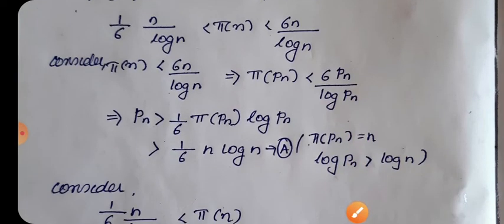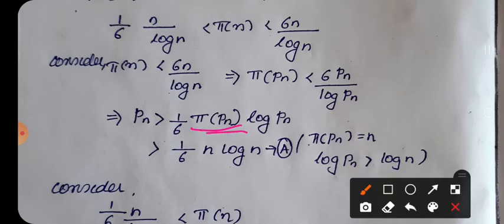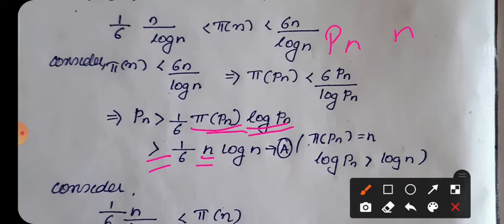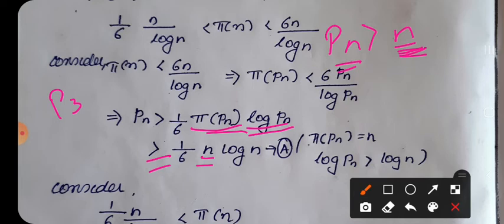Since pn is the nth prime, we know π(pn) = n, meaning the number of primes less than or equal to pn is exactly n. Also note that pn ≥ n: for example, p1 = 2, p2 = 3, p3 = 5, so in general pn > n. Since the logarithmic function is an increasing function, pn > n implies log(pn) > log(n).